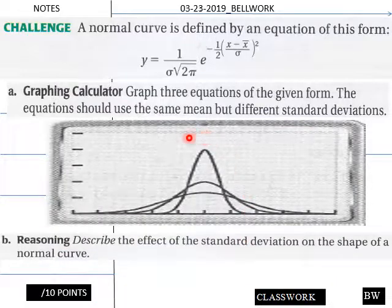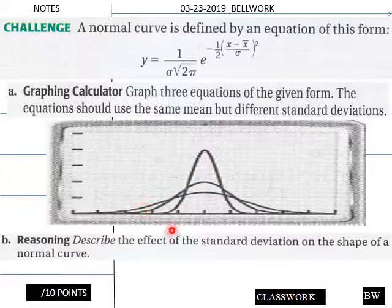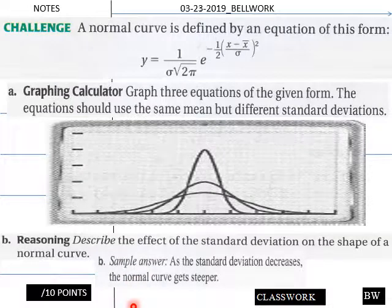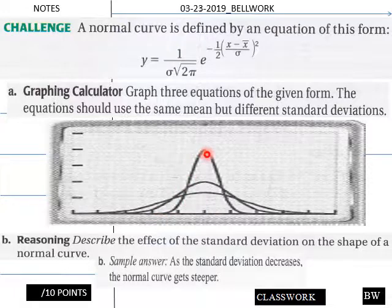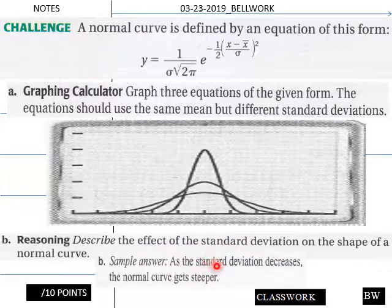Okay students, here is your solution. Here are three different examples of having different standard deviations and its effect on a standard normal curve. Here's a sample answer for part B: as the standard deviation decreases, the normal curve gets steeper — it gets scrunched in further and the curve is drawn up when you have a more dense standard deviation structure.